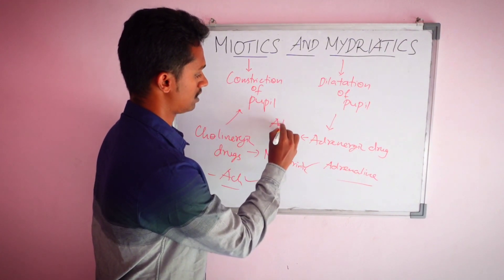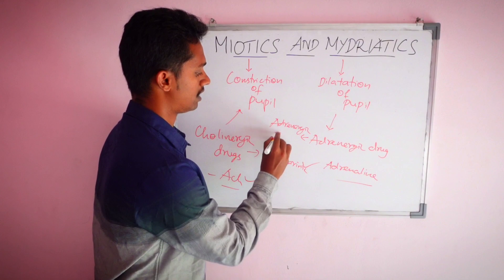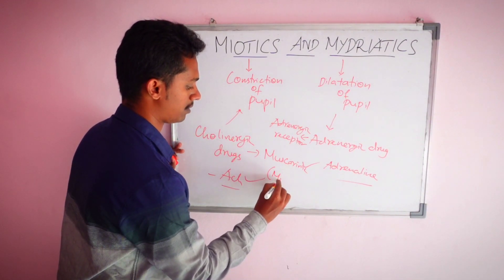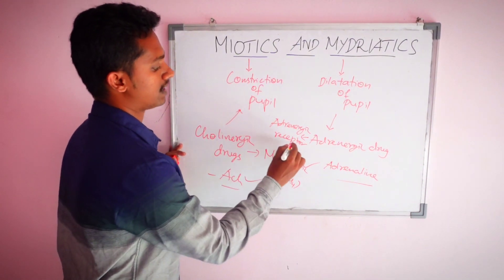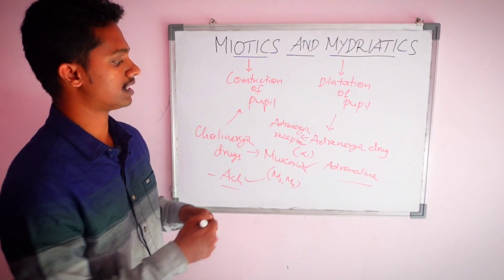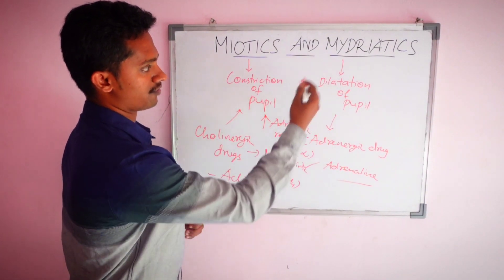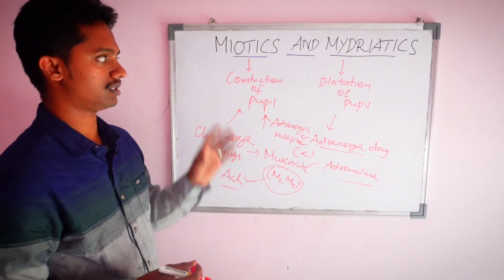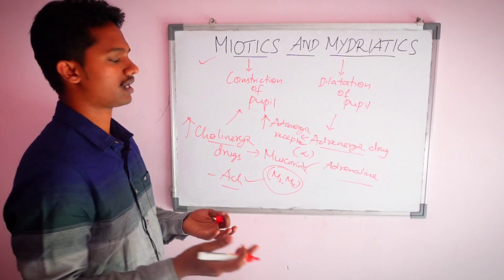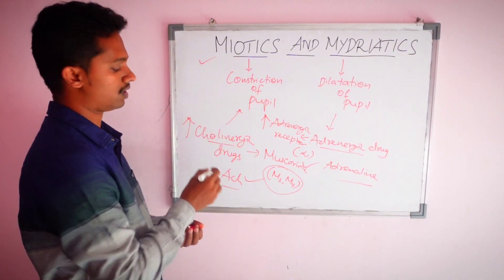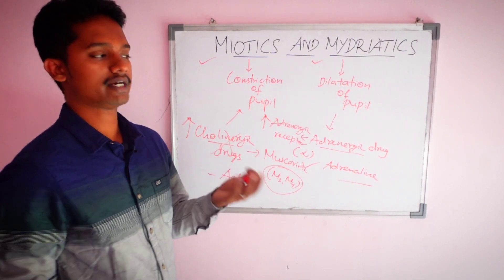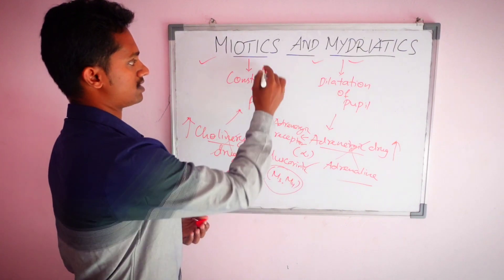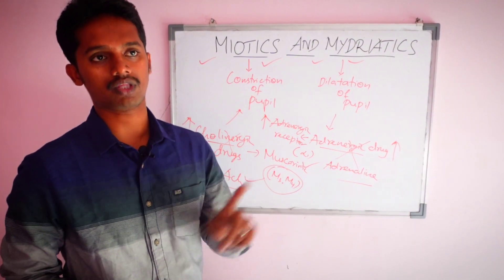Adrenergic effects are produced by acting on adrenergic receptors. There are many subtypes, particularly M3 and M4 muscarinic receptors. Adrenergic drugs produce dilation of the pupil — mydriasis. Muscarinic receptor stimulation produces constriction of the pupil — miosis. That is why these are called cholinergic drugs.